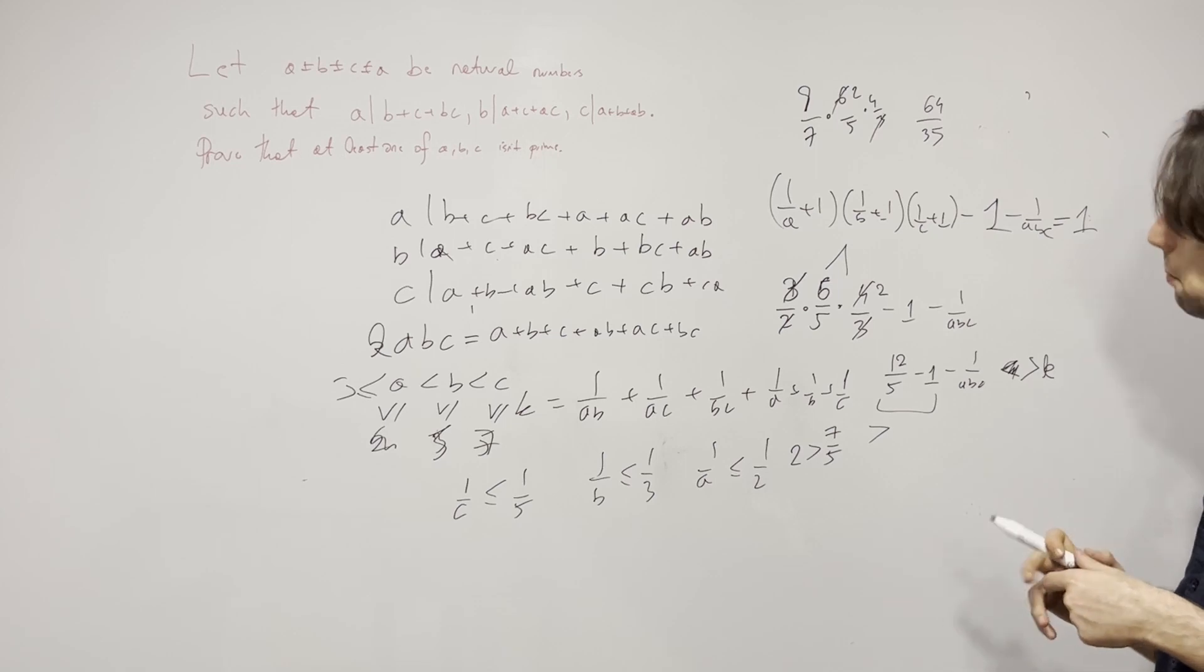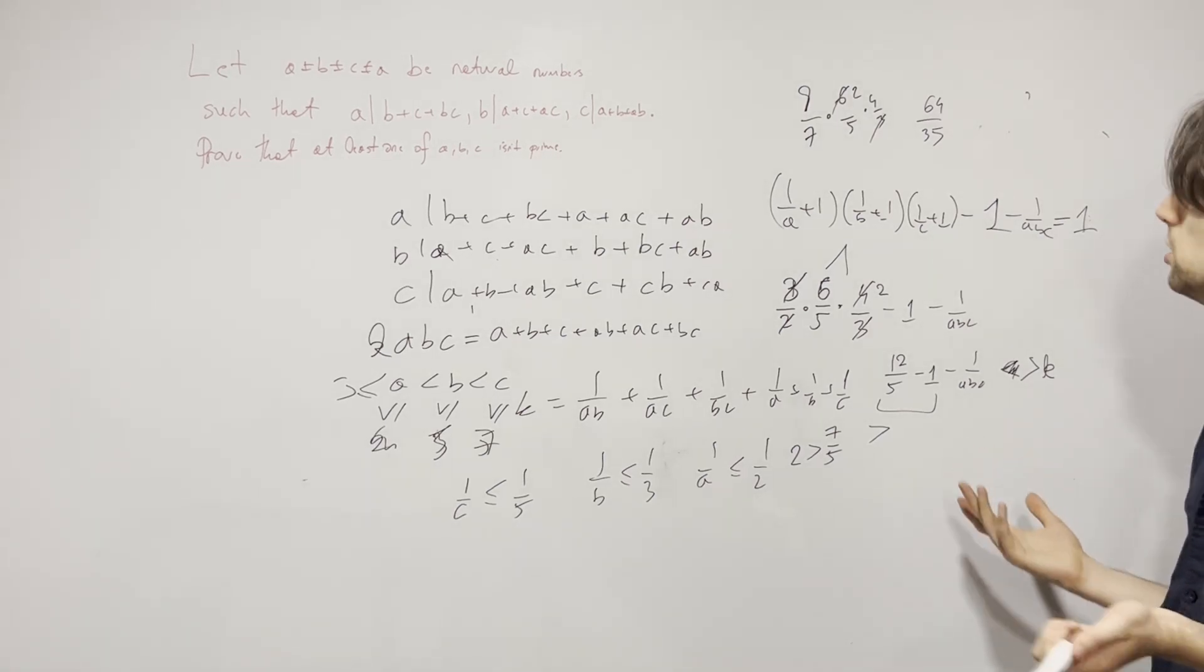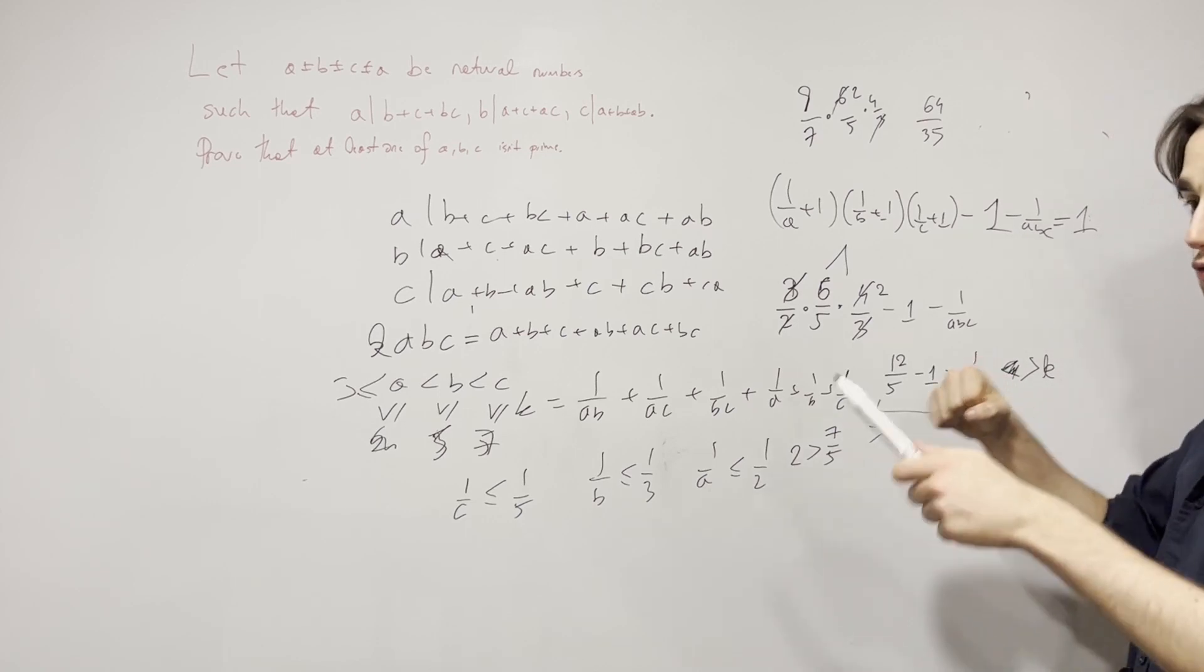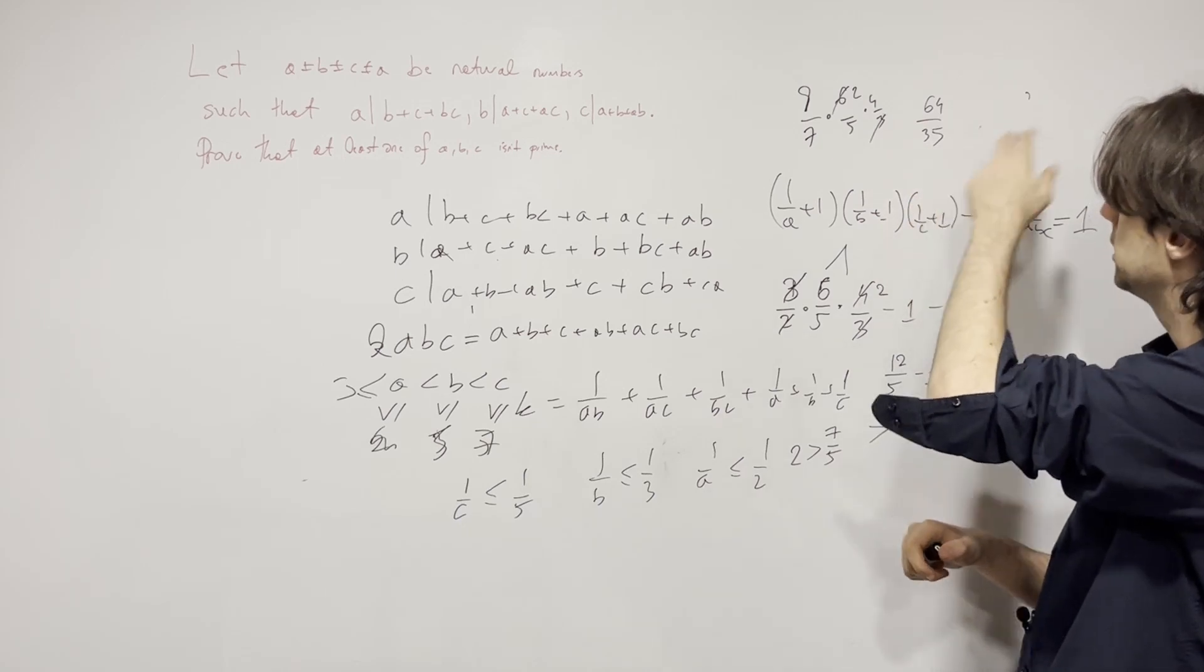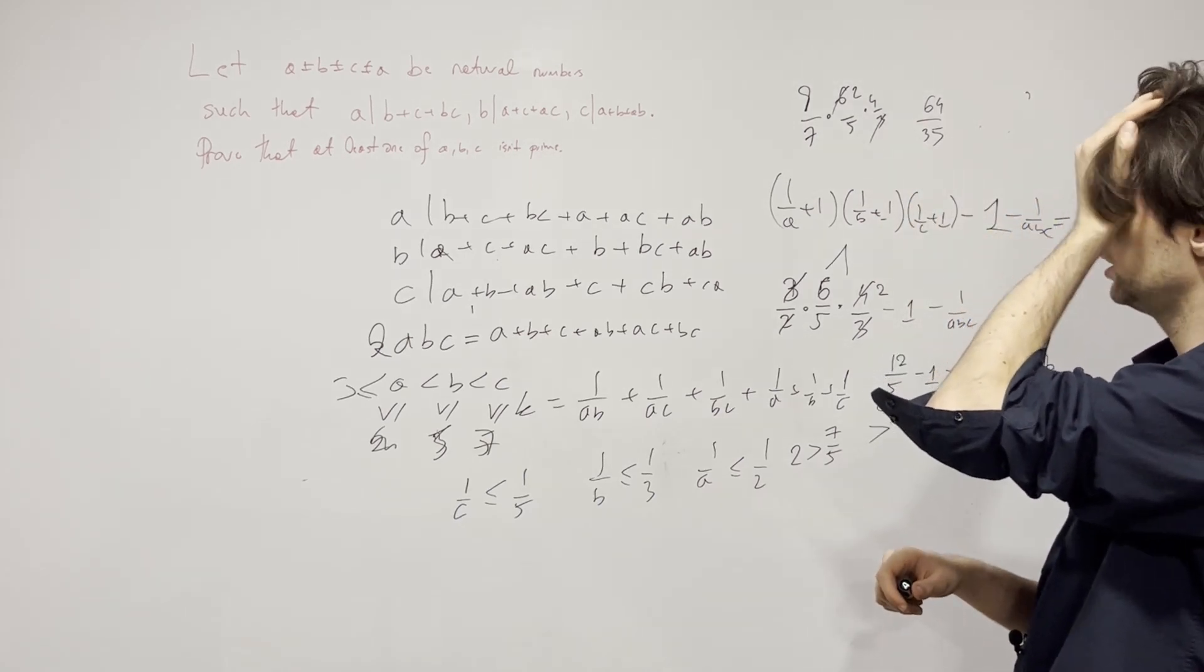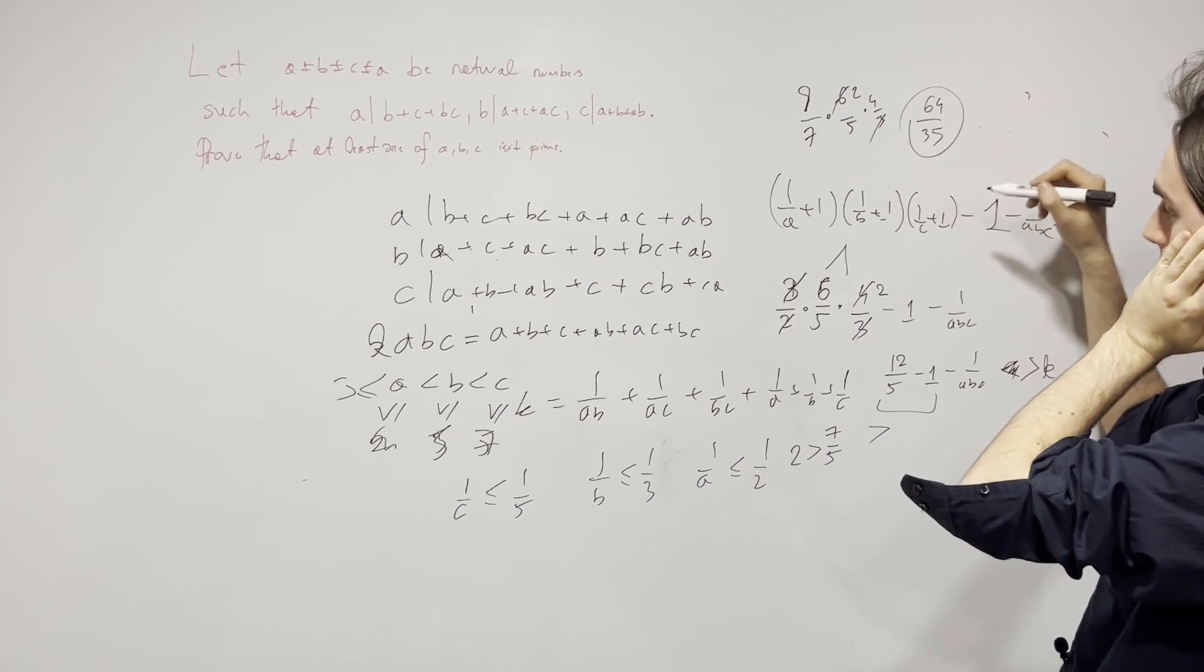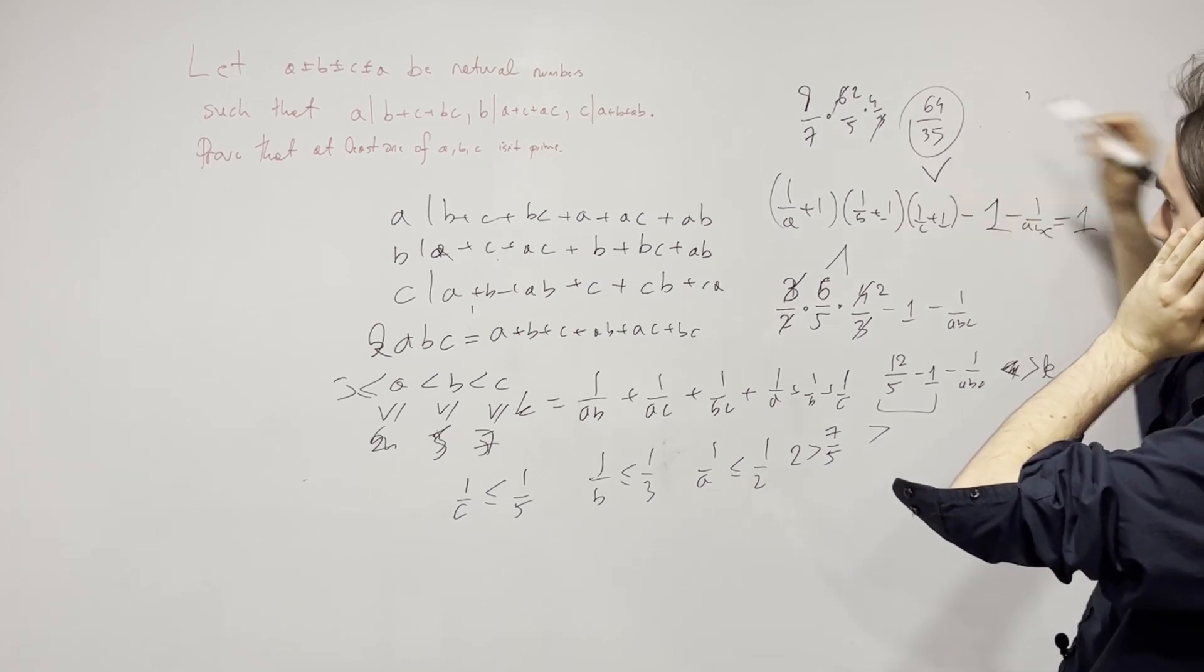If I'm not mistaken, I think this bigger estimate just destroys the problem and finishes it. Finish it! And because what we have is 64 over 35, that's what this whole thing is less than.